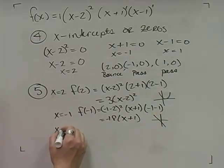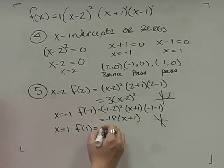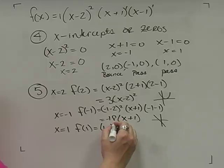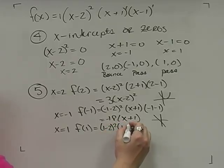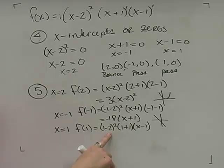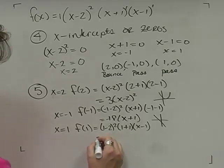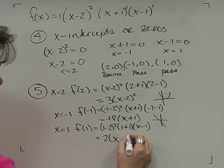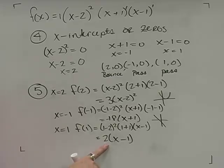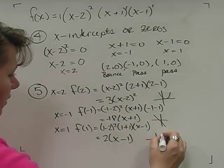For x equals 1, substituting into the other factors: (1 minus 2) squared is 1, times (1 plus 1) is 2, so near x equals 1 the function behaves like 2(x minus 1) — a linear equation with a positive slope of 2, confirming a pass-through at x equals 1.